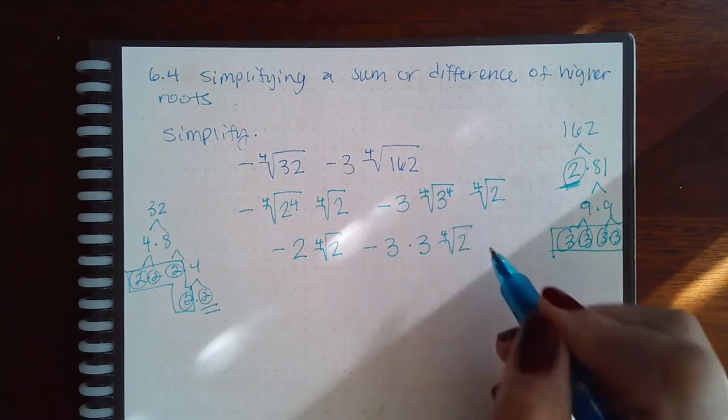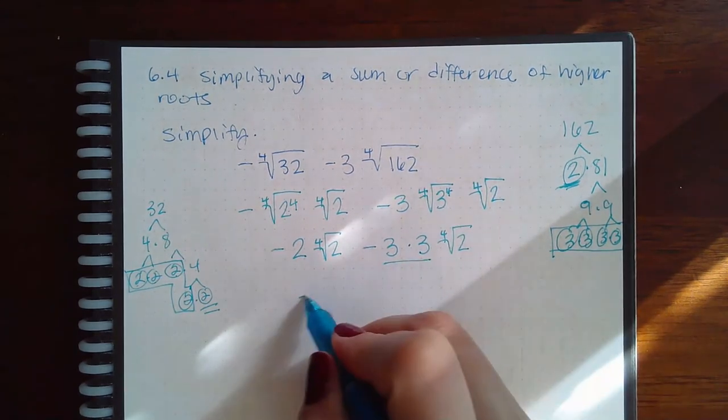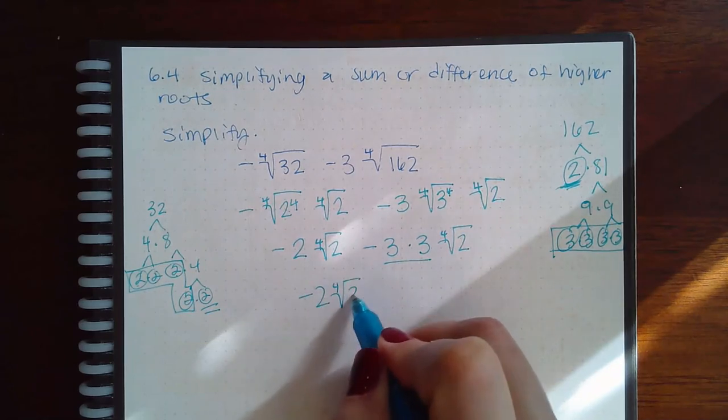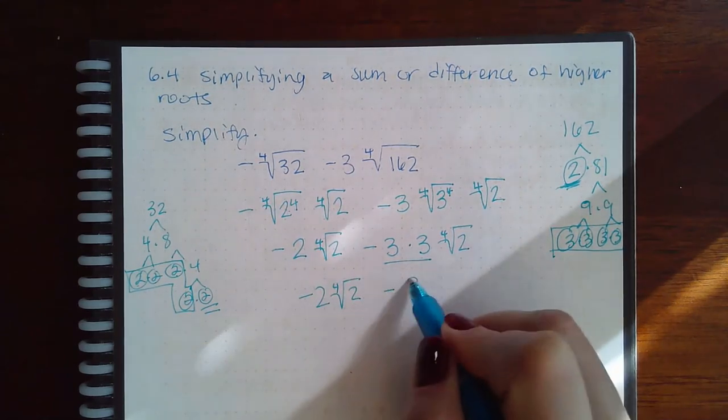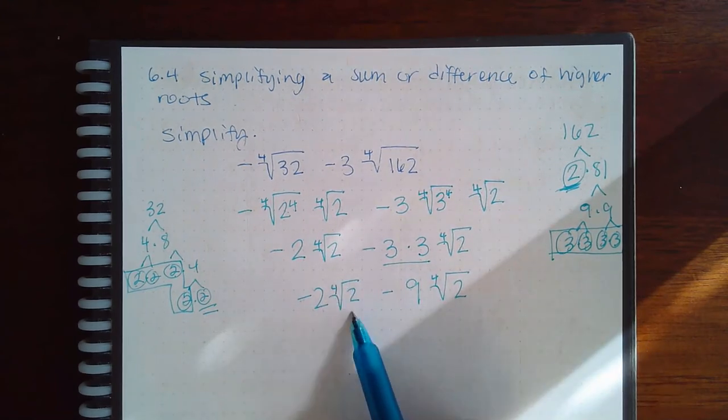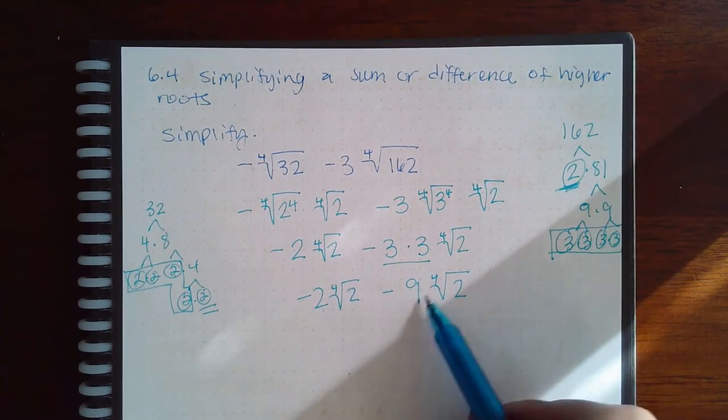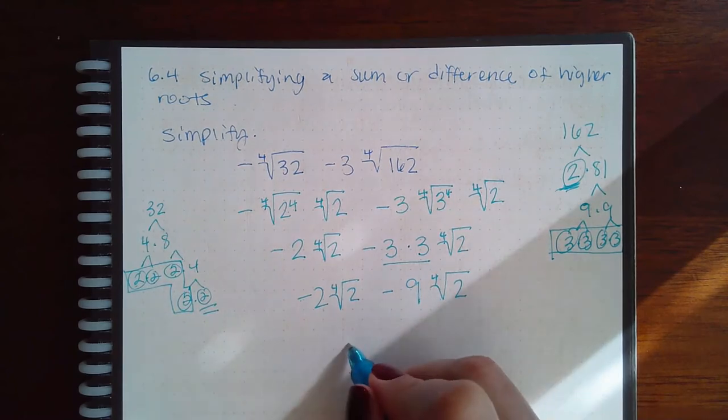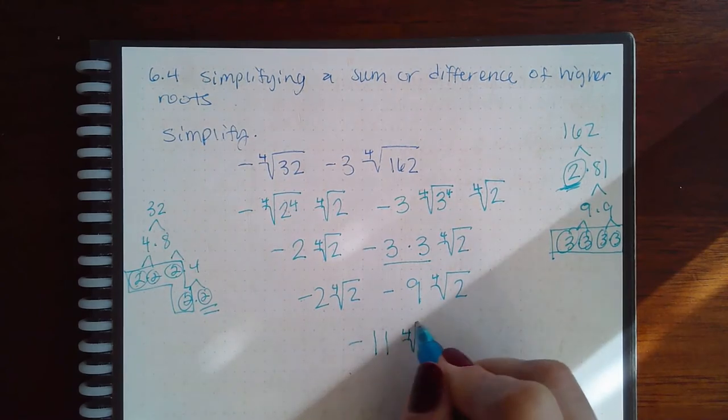So let's multiply the outside together. We get nine. So I have two fourth root of two minus nine fourth root of two, which means I have negative eleven fourth root of two.